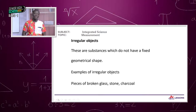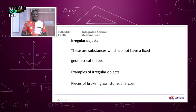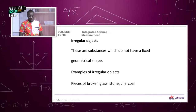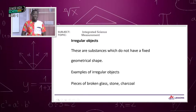We started with liquids, worked on regular solids, and now move on to irregular objects. These objects do not have specific shapes — you cannot easily determine their dimensions to calculate their volume. But in science, we can determine their density.